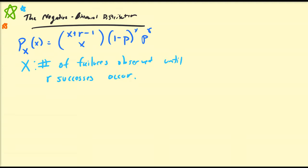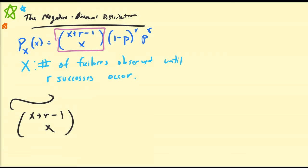Before we get into the actual derivation of the moment generating function for a negative binomial random variable, I want to derive a particular combinatorial identity that you may not be familiar with, because we're going to need to rearrange this x+r-1 choose x term. It's definitely not going to be as easy to work with as, say, n choose x. So let's work on this x+r-1 choose x and see if we can get a better representation of this.